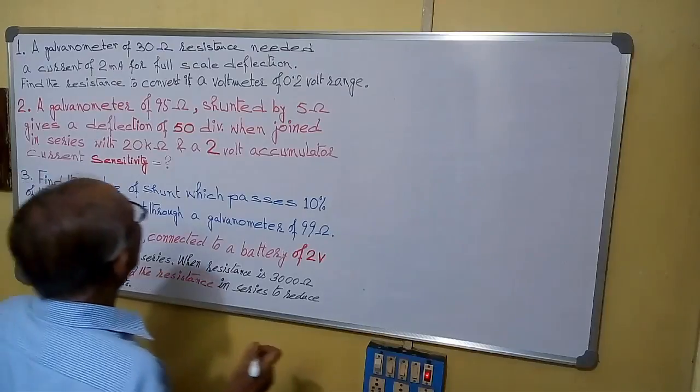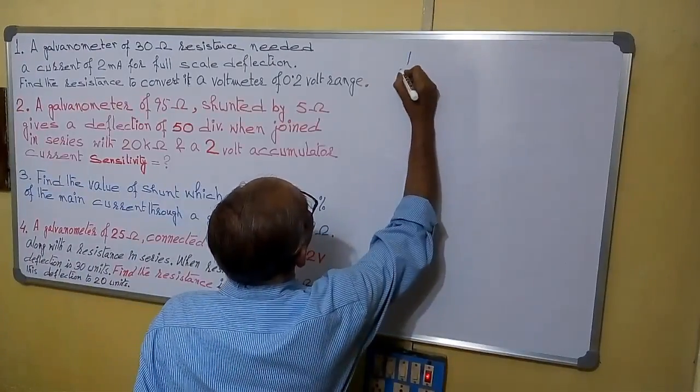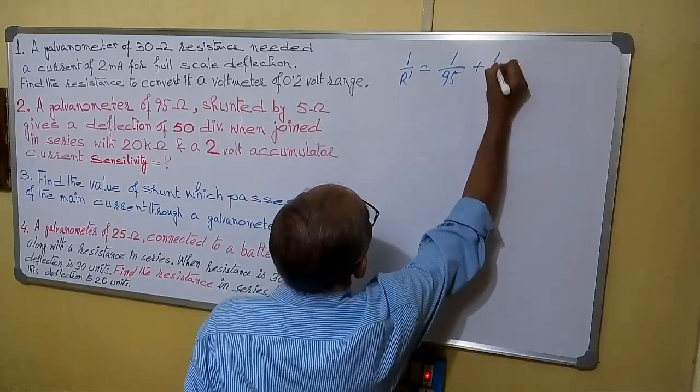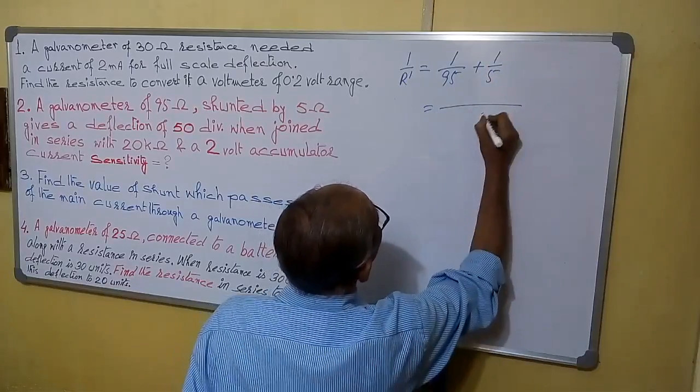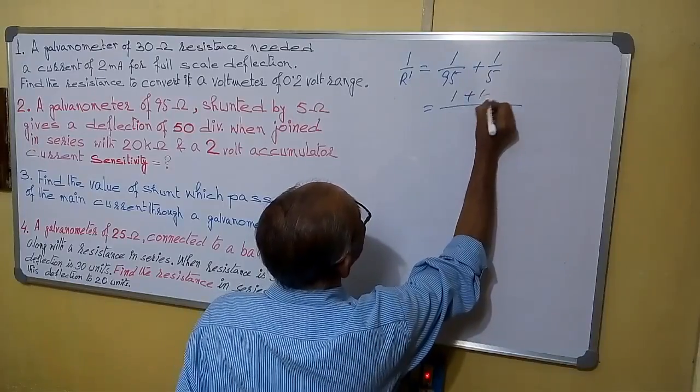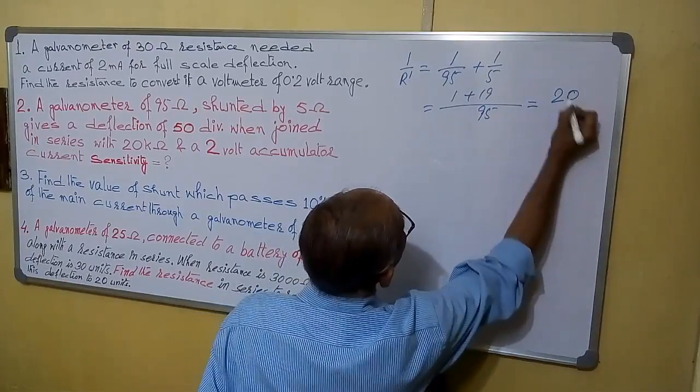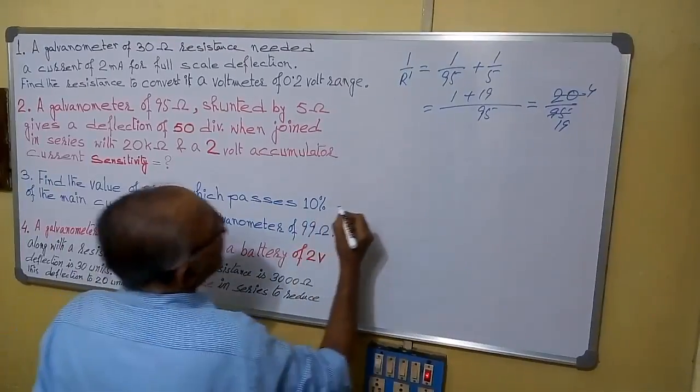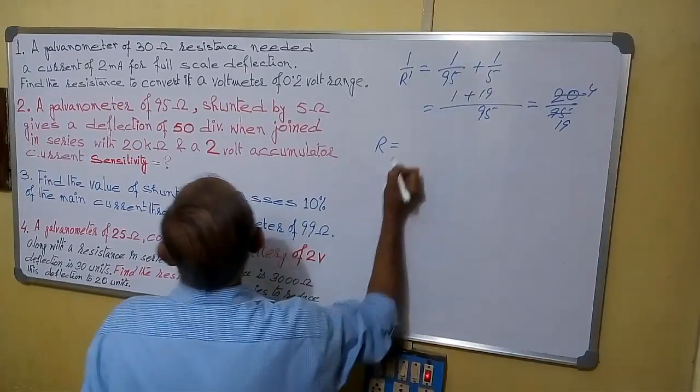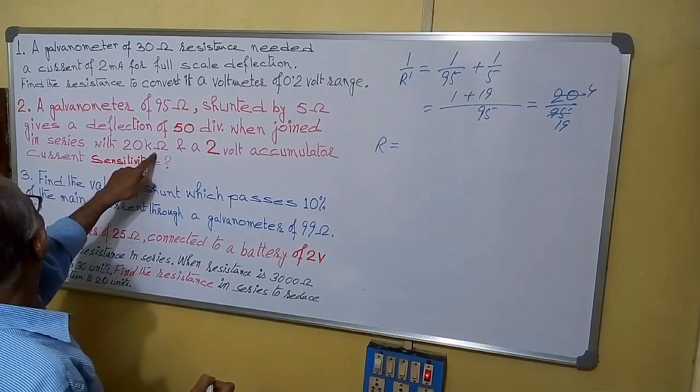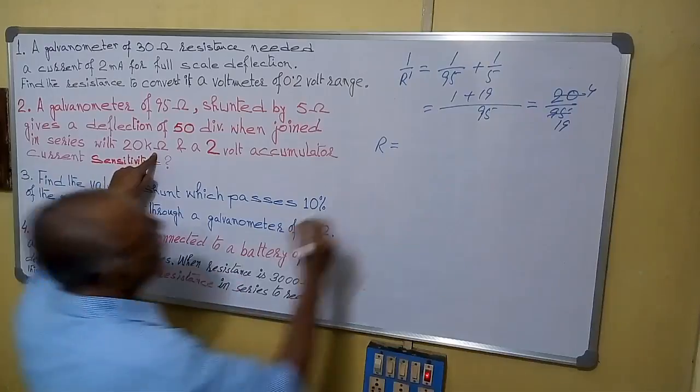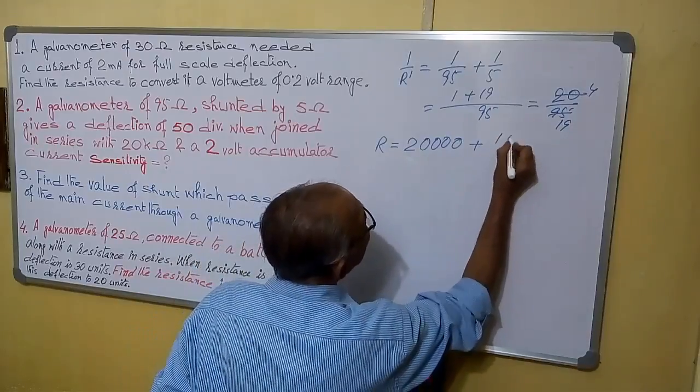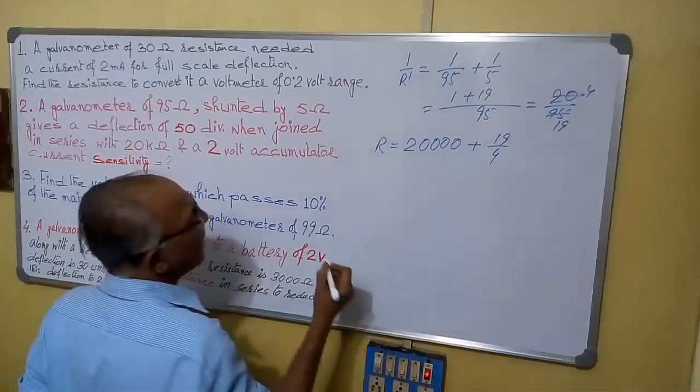It is 95 ohm and shunted by 5 ohm, so we can find 1 by R' equals to 1 by 95 plus 1 by 5, equals to 100 by 95, which is 20 by 19. So R' equals to 19 by 4. It is in series with a resistance of 20 kilo ohm, means 20,000 ohms plus 19 by 4.